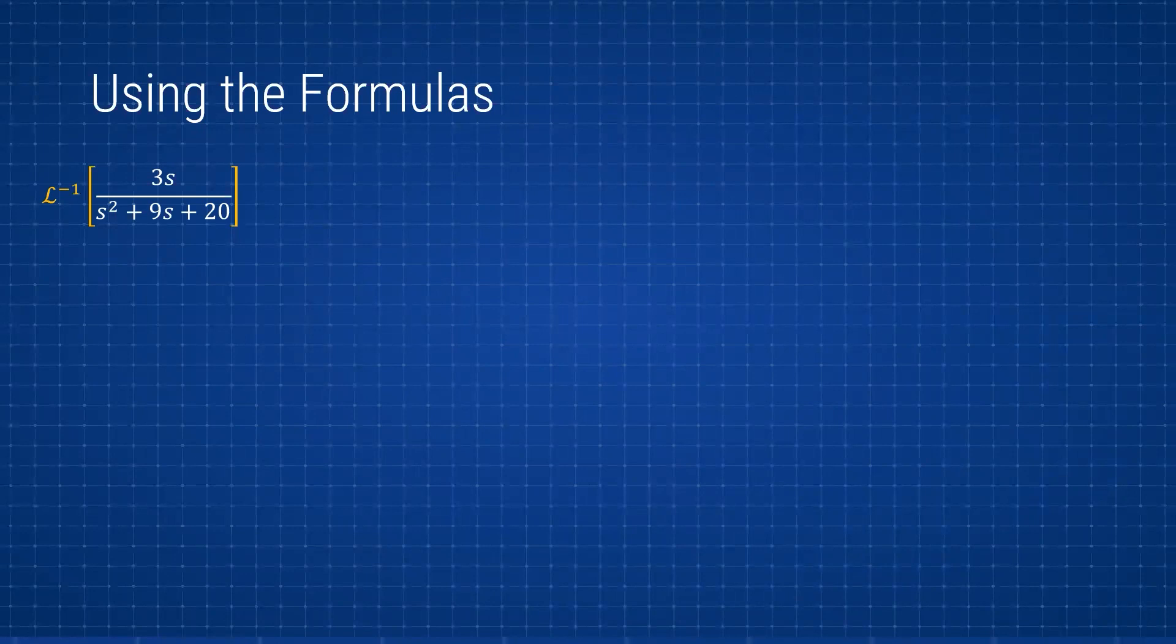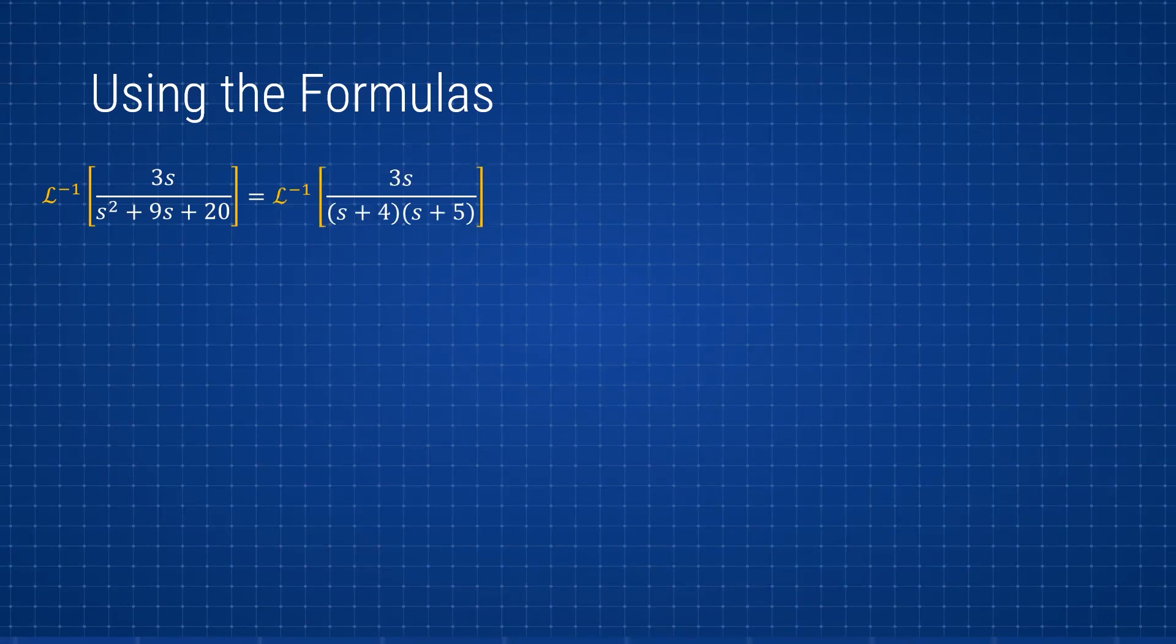The way to use the formula is very simple. You can see the bottom we can simplify by factoring, and it will be (s + 4) times (s + 5). In the book that we're using for our class, if we look at formula 12 on page 265, we get this formula where it says that the Laplace inverse of s over (s - a)(s - b), the solution is 1 over (a - b) times (ae^(at) - be^(bt)).